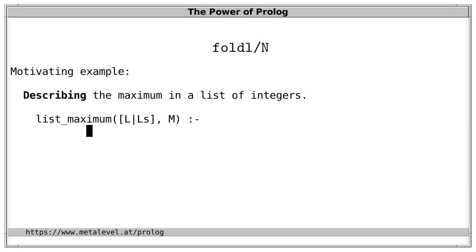the point of the foldL family of metapredicates is that we can shorten such relations considerably. We write fold from the left over a predicate indicated by a partial goal. Let's call it maximum underscore. We fold over the list Ls where the initial state is L and the final state is m. So,